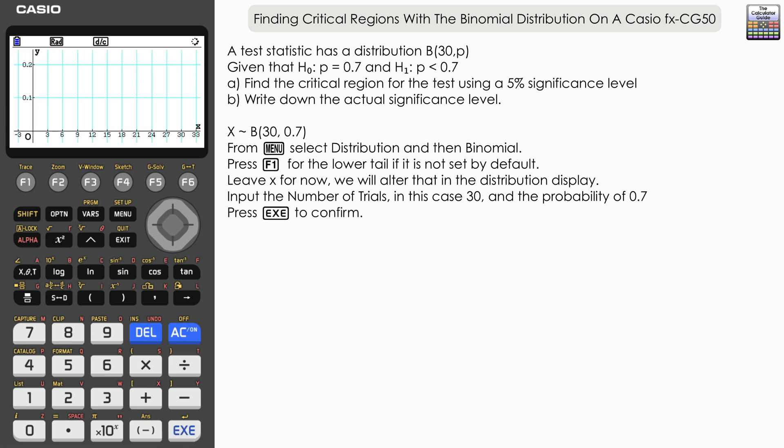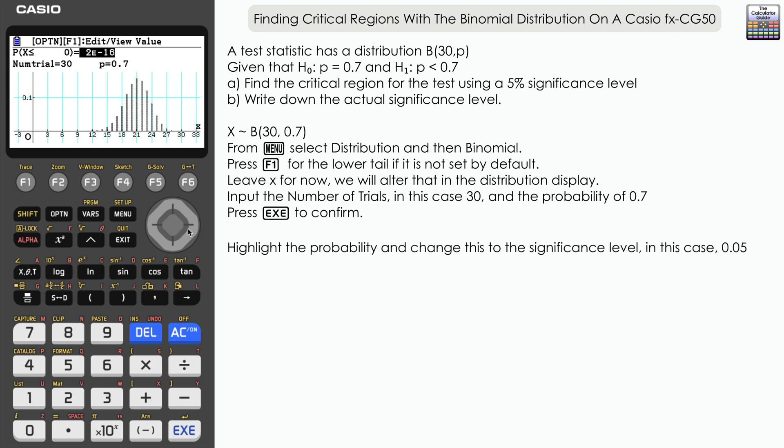So at the moment we just have the default value of x ≤ 0, which obviously has given us a very low probability indeed, but it's actually the probability that we are going to change to reflect the significance level. Now we're given a significance level of 5%, so we're going to switch to that and alter that to 0.05, the decimal equivalent of 5%, and press execute.